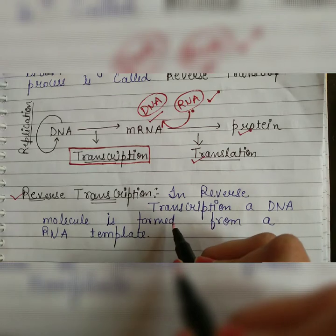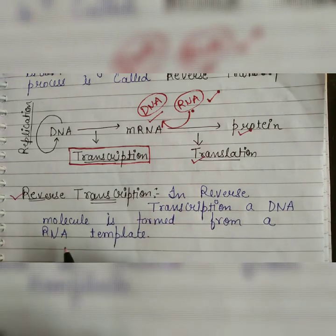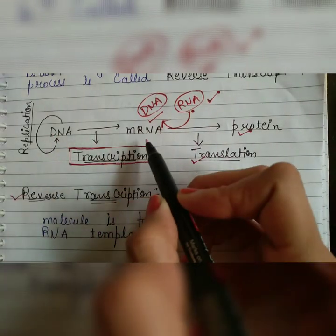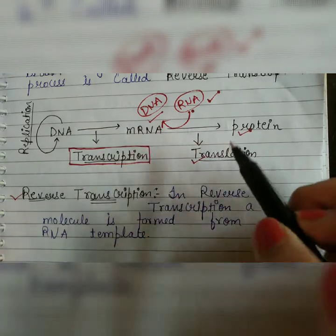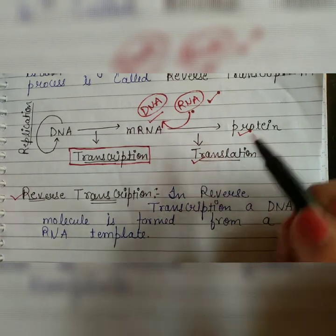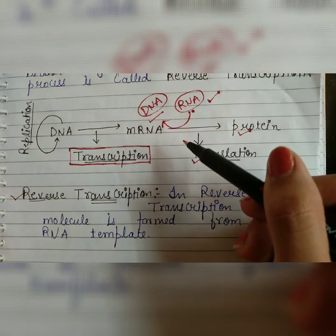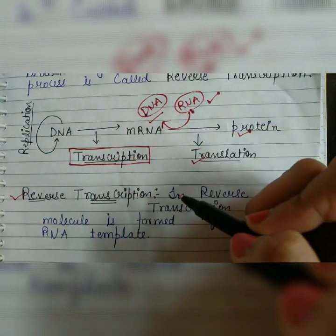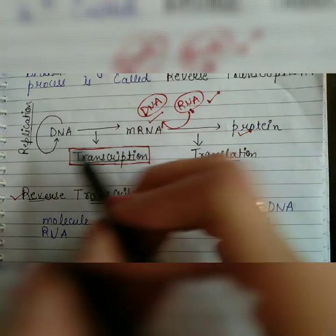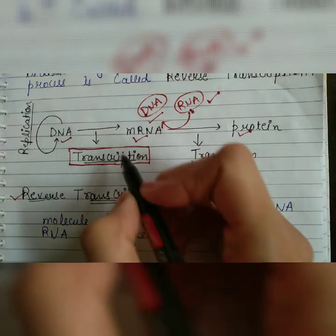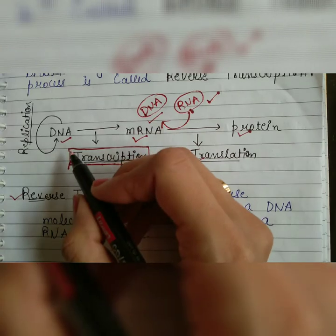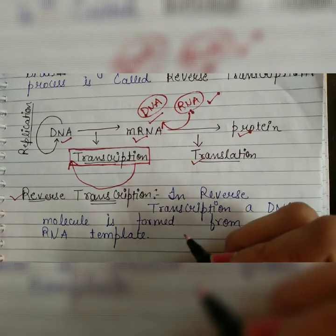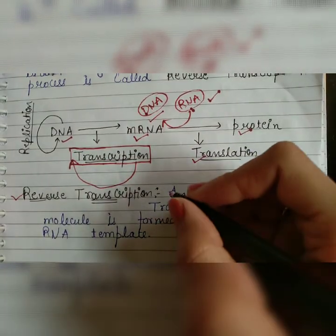In reverse transcription, a DNA molecule is formed from an RNA template. In the normal process, DNA forms mRNA and mRNA forms proteins. But in some viruses where RNA is present as genetic material, RNA first forms DNA. This process is called reverse transcription, because normally transcription is the formation of mRNA from DNA, but if DNA is being formed from mRNA or RNA, then it is reverse transcription.